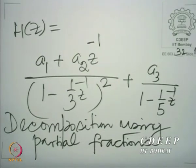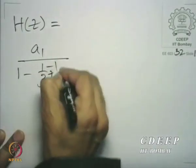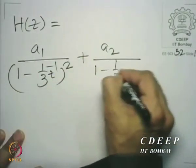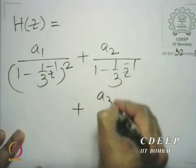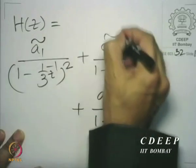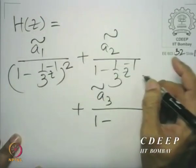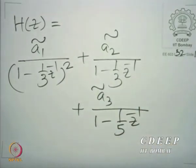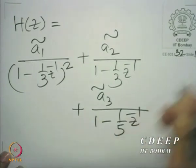Incidentally, there are multiple forms of partial fraction decomposition. For example, the same system function could also be decomposed in the following way by partial fraction expansion. H(z) could have been written as some A_1 divided by 1 minus 1 third z inverse the whole squared plus A_2 divided by 1 minus 1 third z inverse plus A_3 divided—or maybe we'll call it A_1 tilde. They're not the same. We shouldn't write the same symbols.